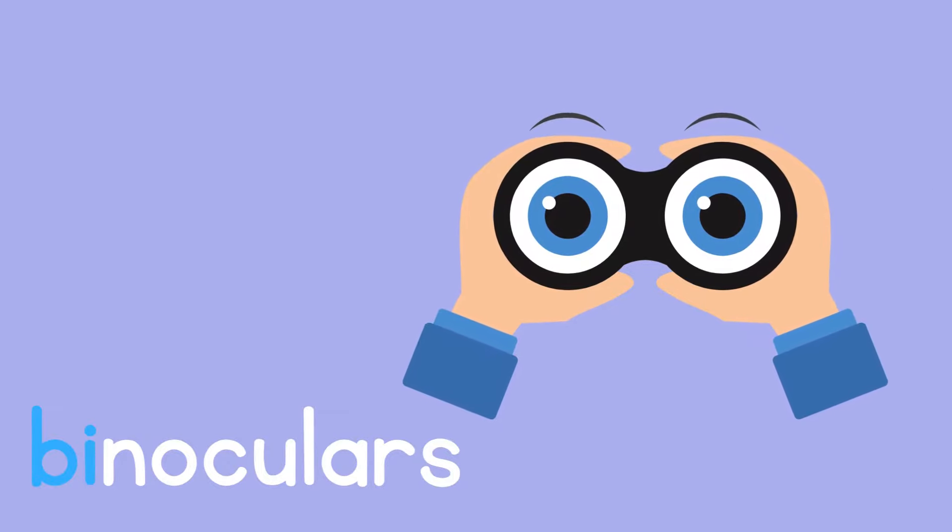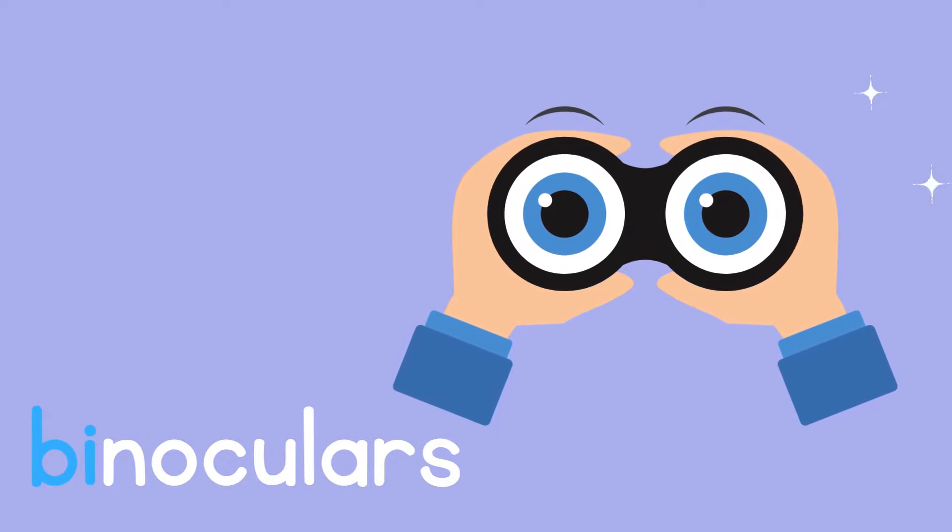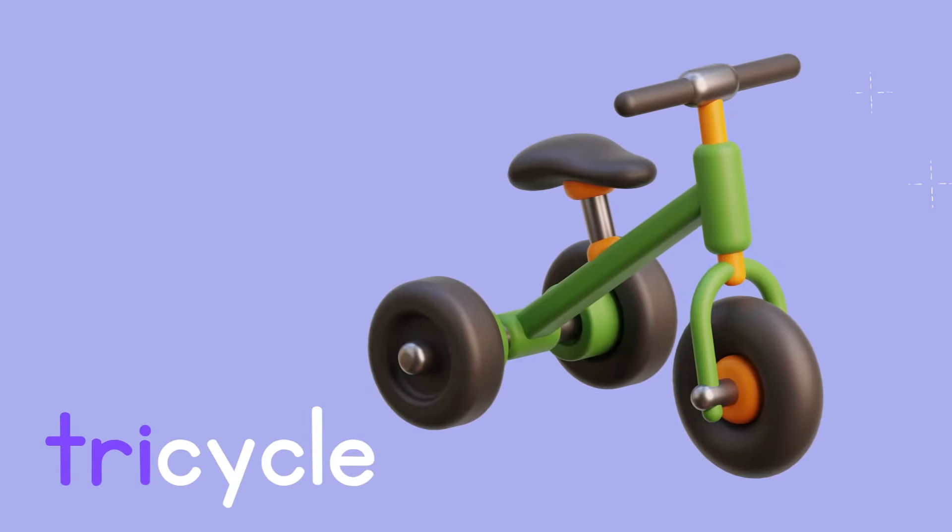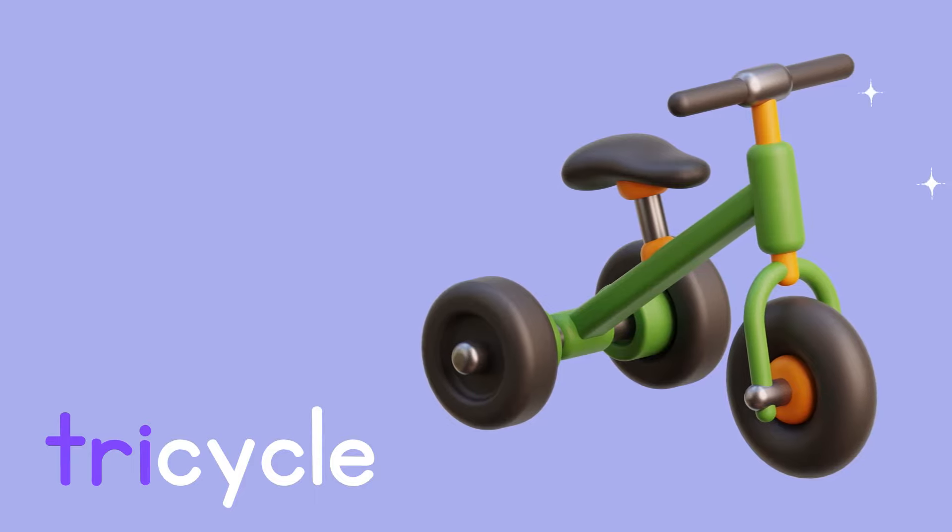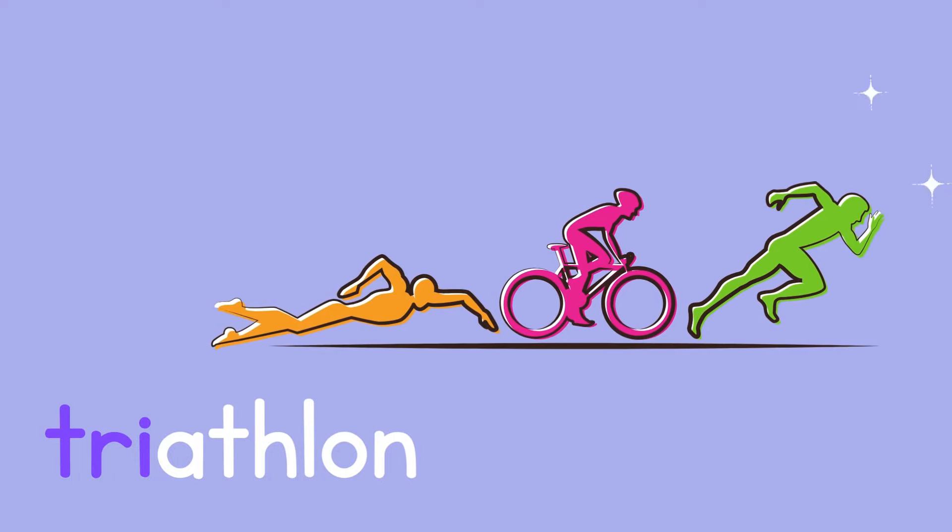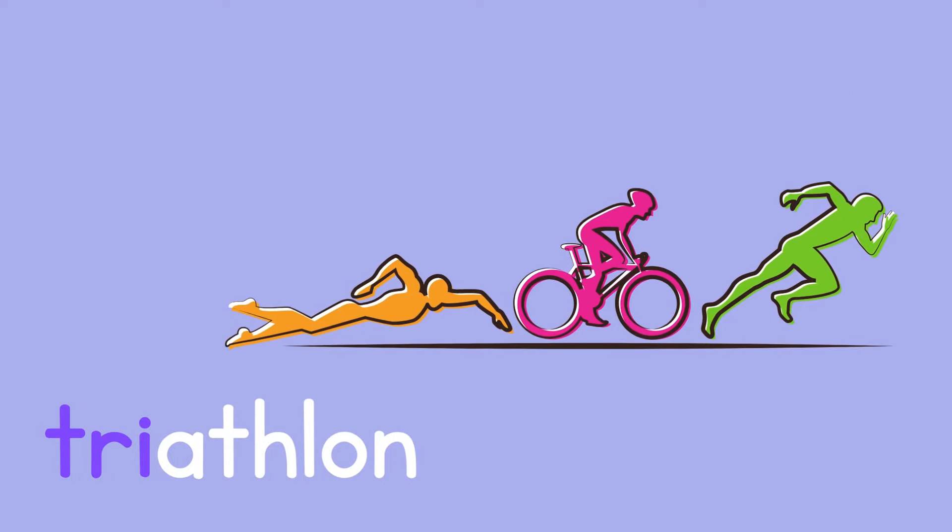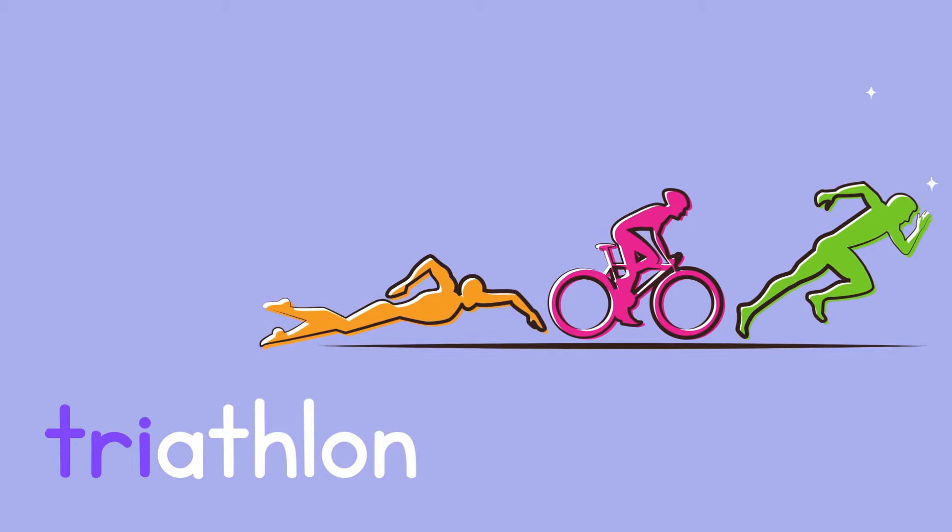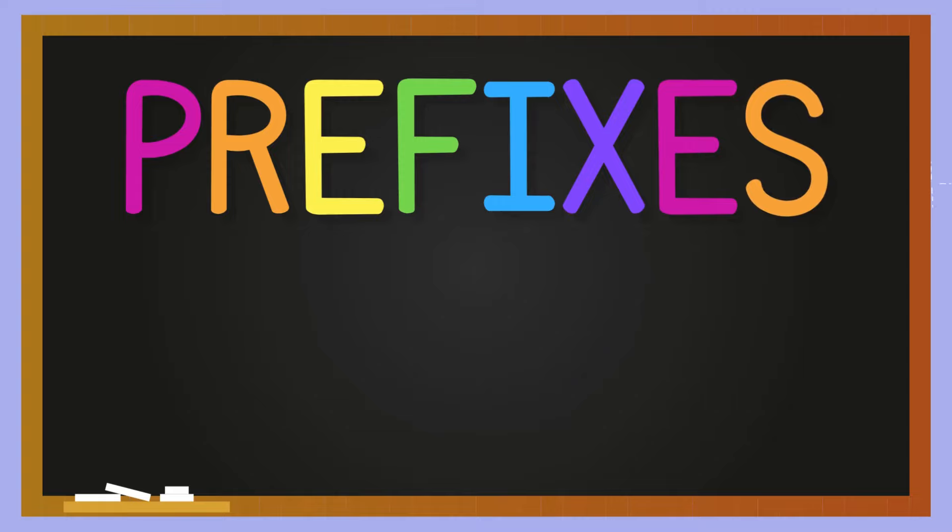And our final prefix: tri, which means three. Tricycle, a three-wheeled cycle. Triangle, three angles. Triathlon, an athletic contest that contains three events like running, swimming, and cycling.